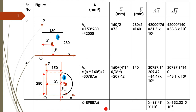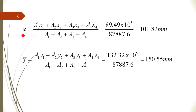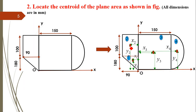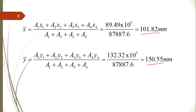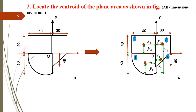Finally, take the summation of column a, summation of column a×x̄, and summation of column a×ȳ. Therefore x-bar = summation of a×x̄ / summation of a = 101.82, and y-bar = summation of a×ȳ / summation of a = 150.55. The CG point for this complete plane lamina is located at x-bar = 101.82 and y-bar = 150.55.